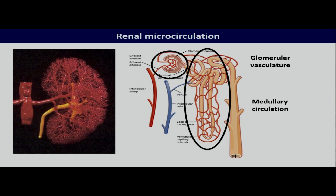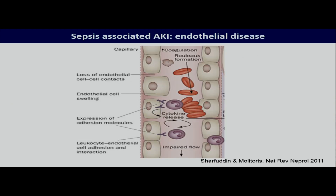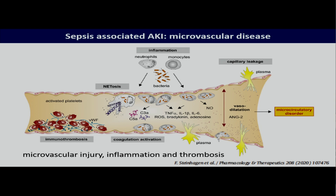If we accept that sepsis is an endothelial disease with vasoplegia, increased permeability, and the formation of microthrombi, then it's clearly not surprising that the kidneys may well be affected and implicated in sepsis, given that the kidneys are such vascular organs. And that's what you can see in animals, for instance, with acute kidney injury in the context of sepsis.